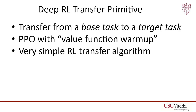This transfer primitive is proximal policy optimization, a well-studied DVRL algorithm with as few modifications as necessary to make a viable RL transfer algorithm. We found that proximal policy optimization without modifications rapidly destroys behavior early in training because its updates have very high variance. In order to combat this problem, we pre-train the value function of the base policy on the target task before performing any policy updates. We call this pre-training value function warm-up.